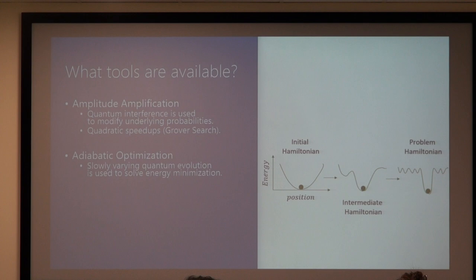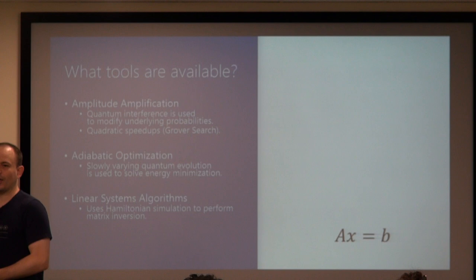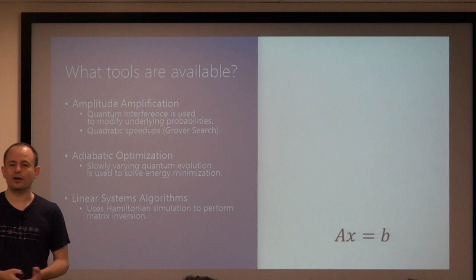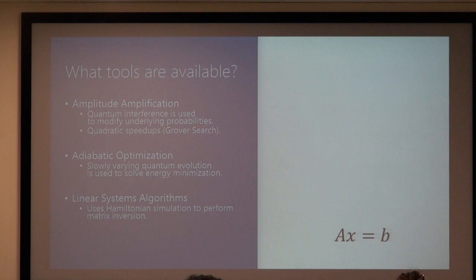The final tool that gets a lot of play is linear systems algorithms. These come up over and over again—if you want to solve AX equals B, these arise in training support vector machines and problems implicitly solved by least-squares optimization. With these three things together, I would say you probably cover 90 to 95 percent of the quantum machine learning literature. That's basically it—or quantum machine learning literature, I should say.